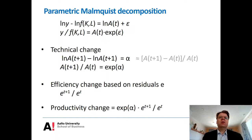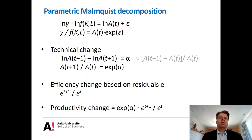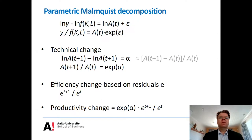Another point worth noting: I assume a single-output production function. This is because I am somewhat skeptical about parametric formulations of the distance function and their properties. For productivity measurement purposes, parametric estimation of the production function should be fine. But for measuring productivity in a multi-output setting, rather than using a distance function formulation, I would prefer to treat bad outputs as inputs and use a single-output characterization.